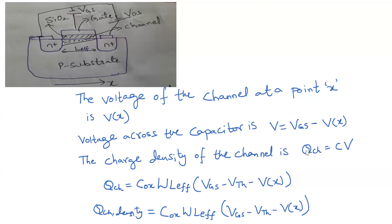The charge density of the channel Q_channel equals C times V. Here C equals C_ox times W times L_effective — the derivation of this capacitance was discussed in another lecture. So Q_channel equals C_ox times W times L_effective times (VGS minus Vth minus V(x)). We subtract Vth because it is the voltage required to create the channel. This gives us the line charge density of the channel.